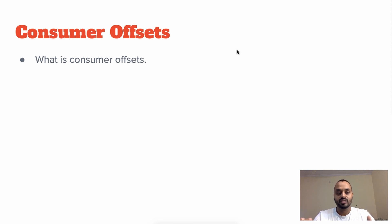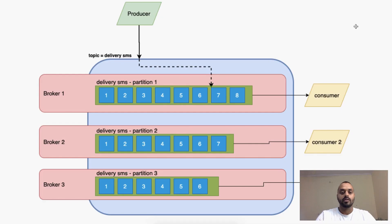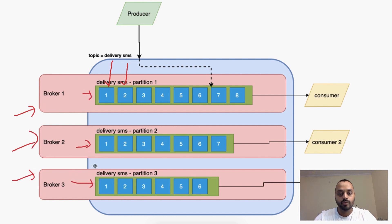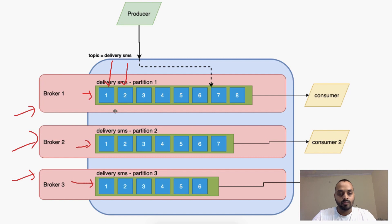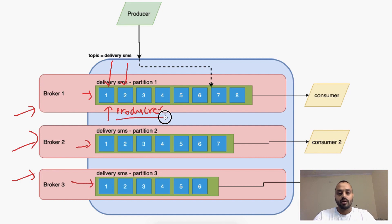So first, what are consumer offsets? Let's take an example. Here a producer is producing to these partitions which are spread over three brokers. These are the partitions and our producer — let's say we have only one producer — and it is producing to these different partitions. Basically, these messages are assigned numbers, and these numbers are called producer offsets.